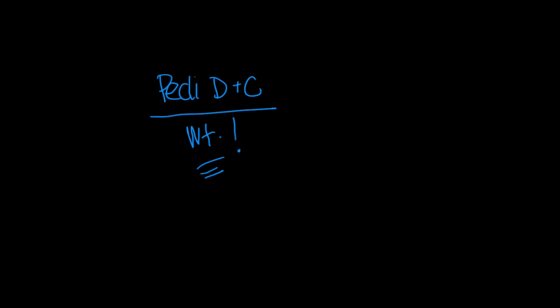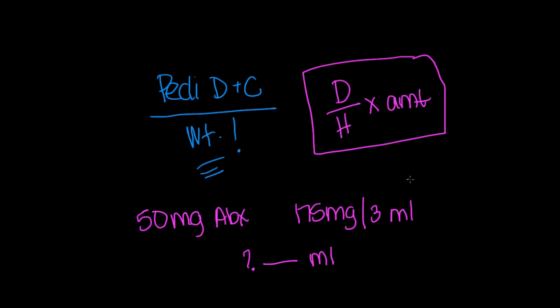So as an example, let's say that we have a question that asks you the doctor's order is going to be for 50 milligrams of an antibiotic. And on hand, you have 175 milligrams per 3 mLs of that antibiotic. And it wants to know how much are you going to give? How many mLs are you going to give? Well, in a regular adult world, you would just do dose over have, or desired over have times amount. And that's a formula that I use. Some of you may know dimensional analysis. By all means, whatever you're familiar with, whatever you're comfortable with using, use that.